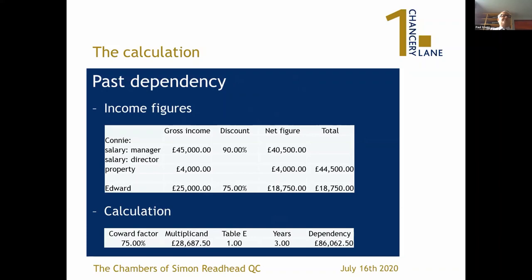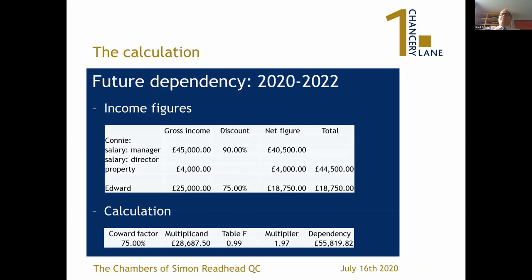We can now calculate the figures for dependency. We've got Connie's gross income as a manager, discounted by 90% to give £40,500, plus her income from a property, giving a total income of £44,500. We discount Edward's income to give £18,750. That produces the Cowden Comex figure. Applying Table E - no adjustment there. Three years' worth gives the past dependency, to which you apply interest.